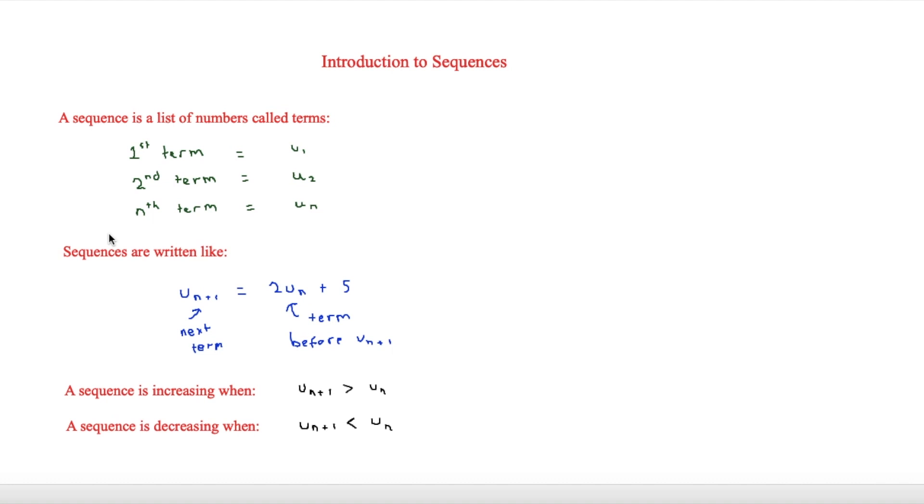So for example, if we had a 25th term, it would be u25. Sequences are also written like this. They have un plus 1 and that means that it's the next term afterward. It doesn't mean it's the second term, it just means it's the next term after what we have.